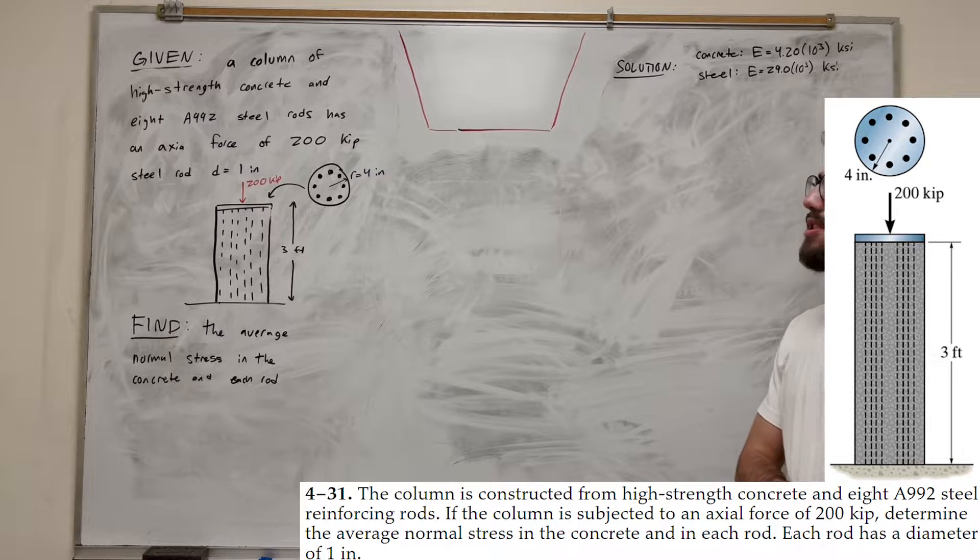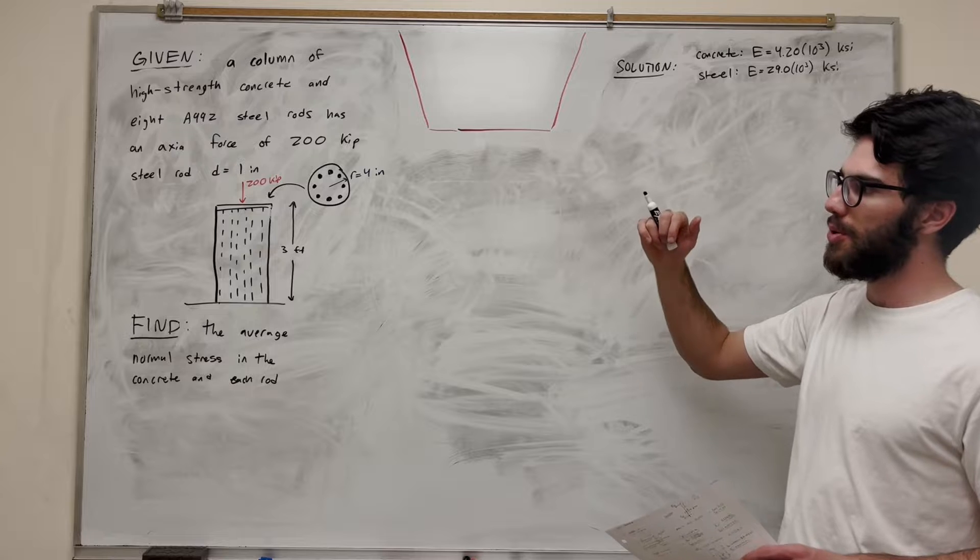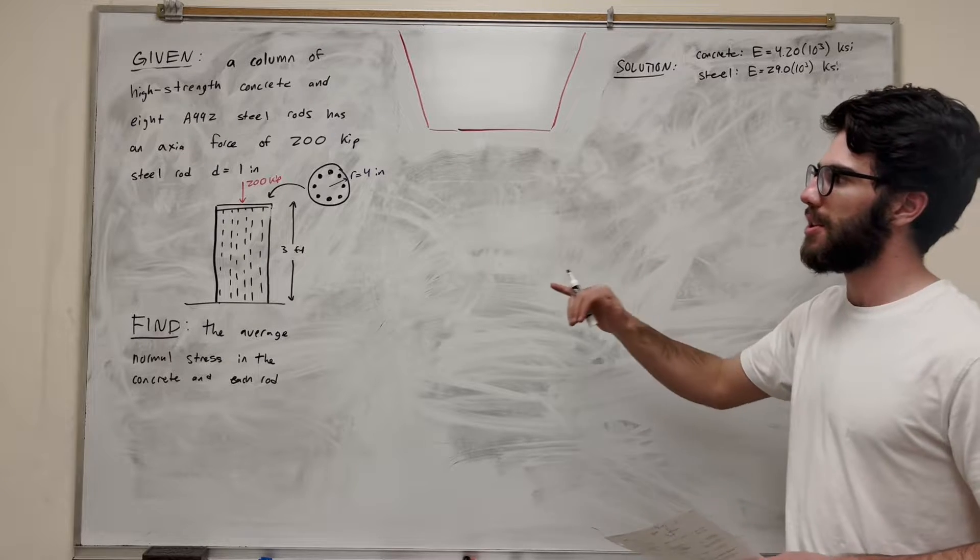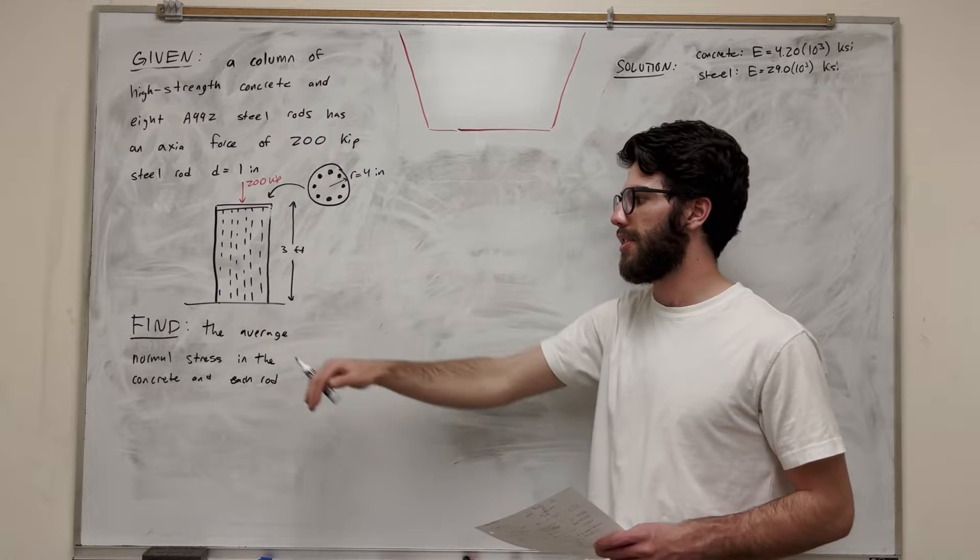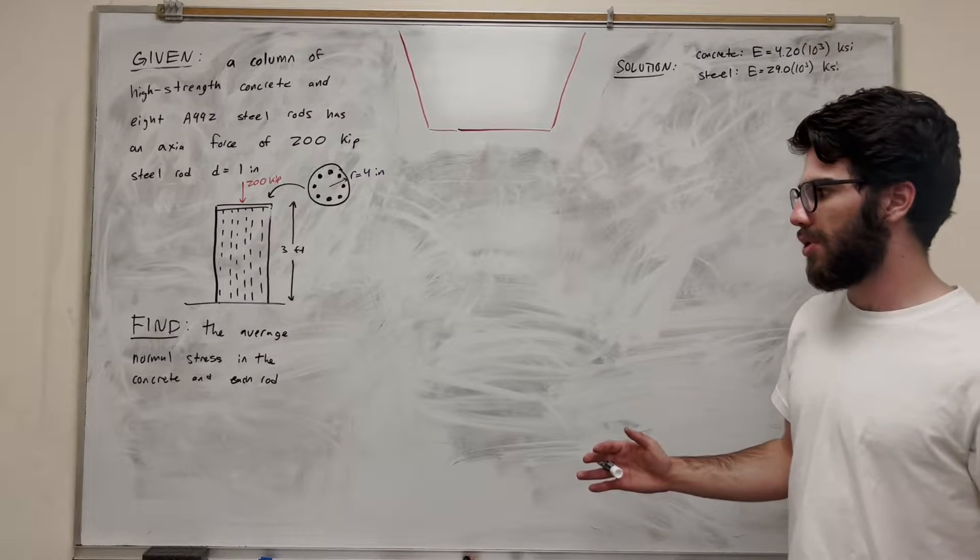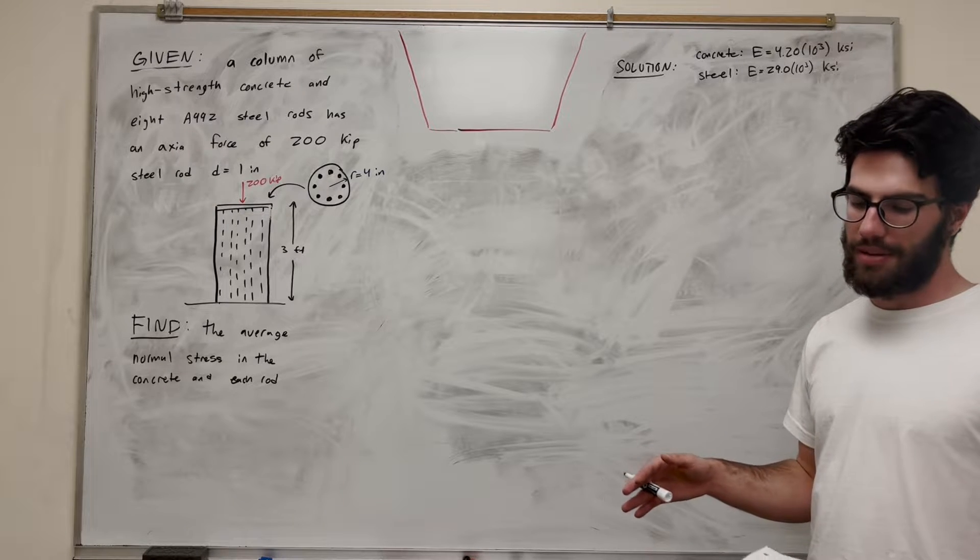We're given this column of concrete and then there's eight steel rods in that concrete and then we're applying a 200 kip force to all of that. So you can kind of see what's happening here. We have the eight steel rods on top and they all cut down through. Now our goal is to find the average normal stress in the concrete and in each rod. So let's go ahead and get started.